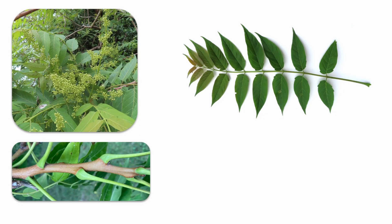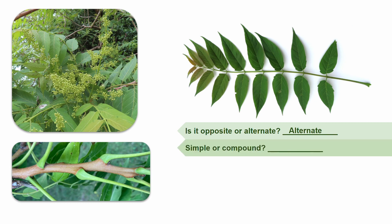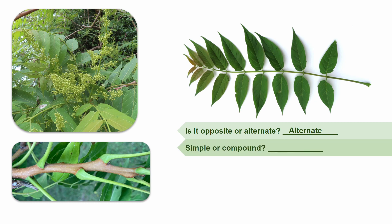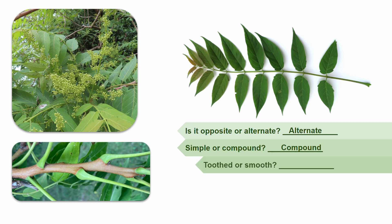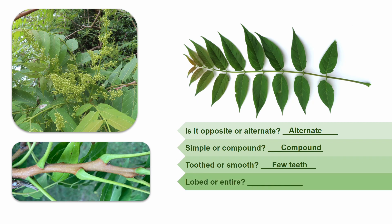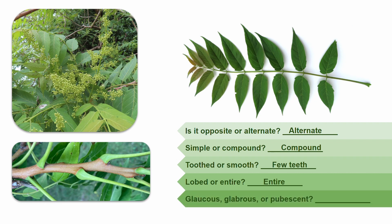Here we have another unknown tree species. Let's work through our questions and see what we come up with. Is it opposite or alternate? Based on our twig, it is alternate. Are the leaves simple or compound? They're compound because they're composed of many leaflets. Are the leaves toothed or smooth? They're smooth except for a few teeth at the base of each leaflet. Are the leaves lobed or entire? These leaves are not lobed. Are the leaves glaucous, glabrous, or pubescent? These leaves are glabrous.